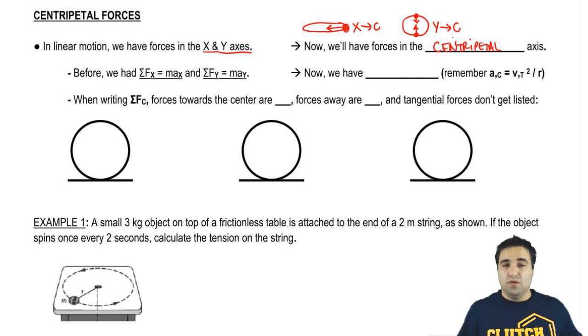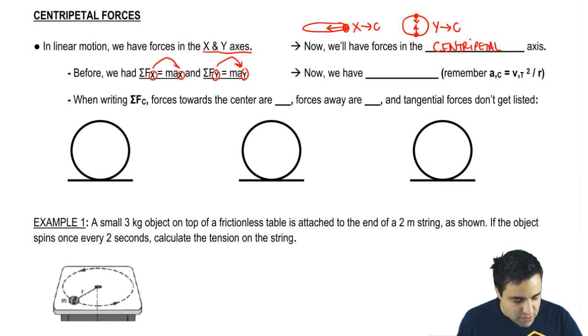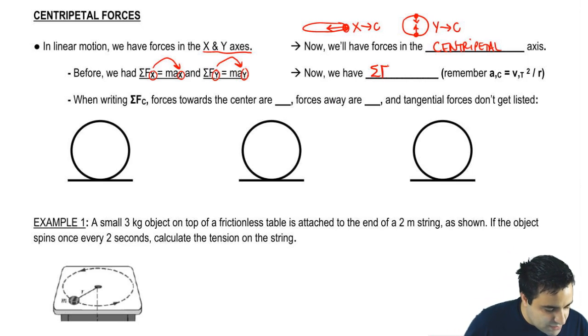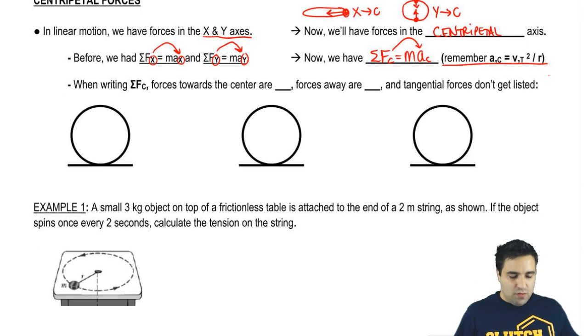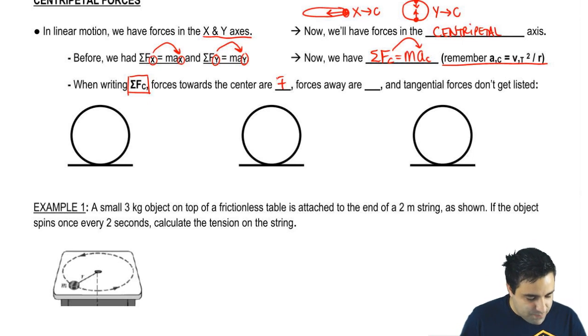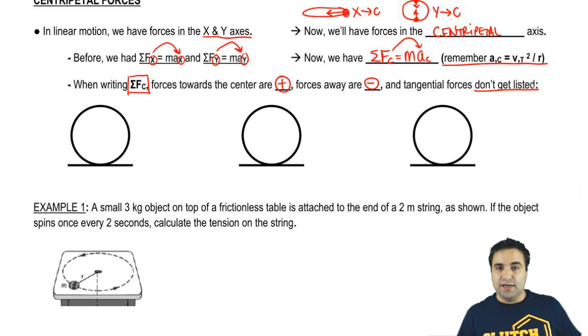And we're going to say that the centripetal axis takes precedence over the x and y axis. So before we had sum of all forces equals ma in the x-axis and sum of all forces equals ma in the y-axis. Now we're going to have the same thing but in the centripetal direction. Sum of all forces in the centripetal direction causes an acceleration in the centripetal direction. And you might remember that a_c equals v squared over r. One quick rule here that you have to know is that when you're writing the sum of all forces in the centripetal direction, forces towards the center are positive, forces away from the center are negative, and tangential forces do not get listed.